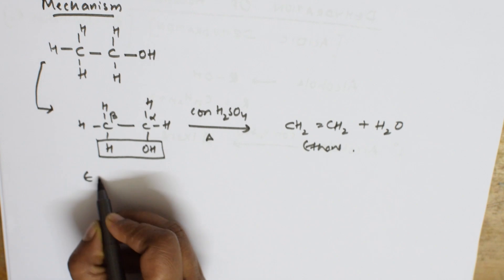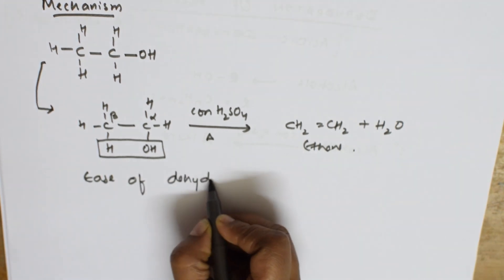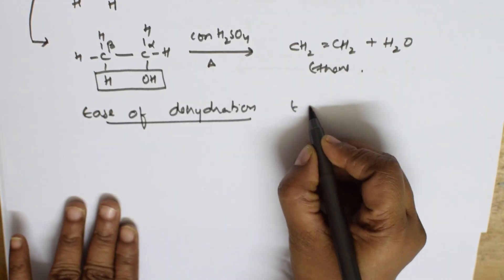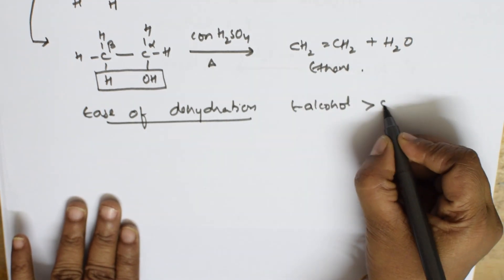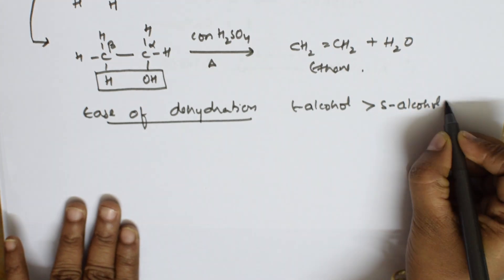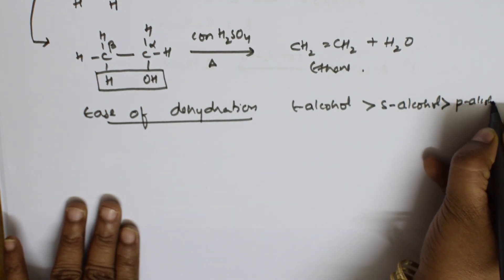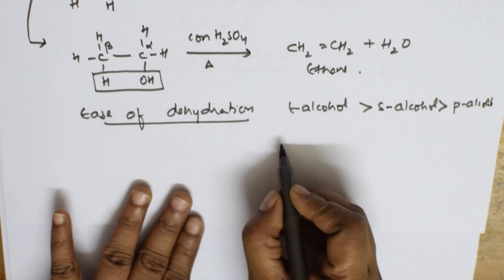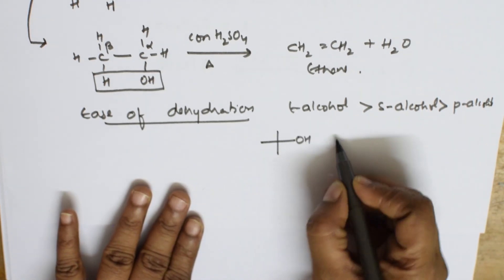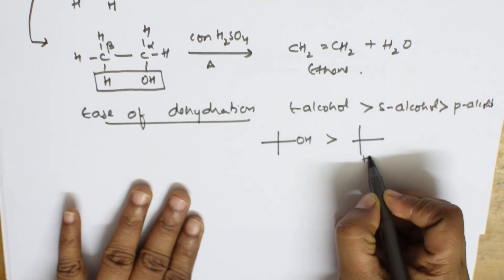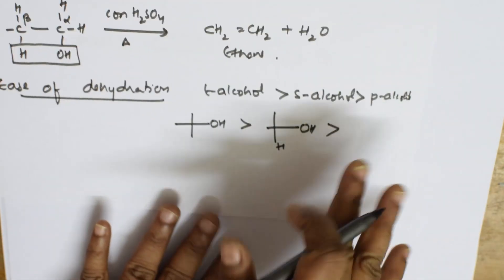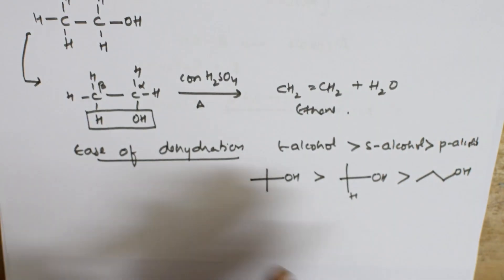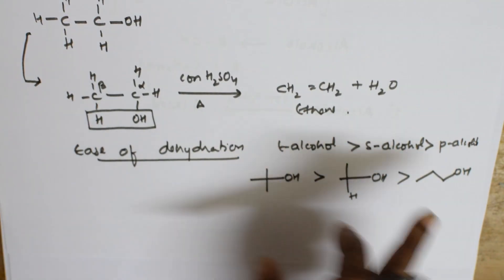Now let's write the ease of dehydration of alcohols. Always remember: the ease of dehydration follows the order — tertiary alcohol reacts with the greatest ease, then secondary alcohol, and then primary alcohol. For example: tertiary alcohol (three alkyl groups + OH) > secondary alcohol (two alkyl groups + OH) > primary alcohol. This is the order in the dehydration process.